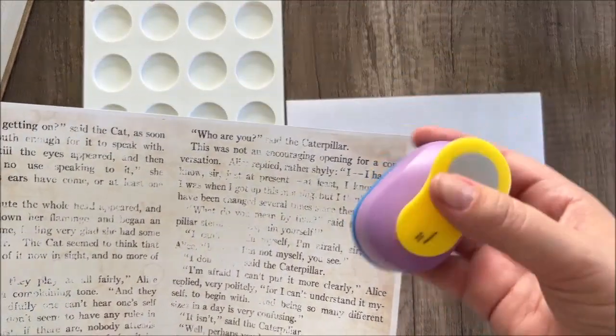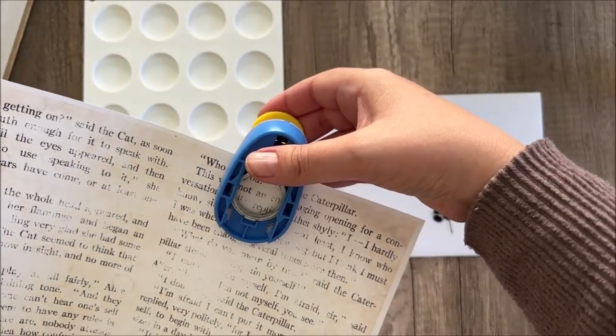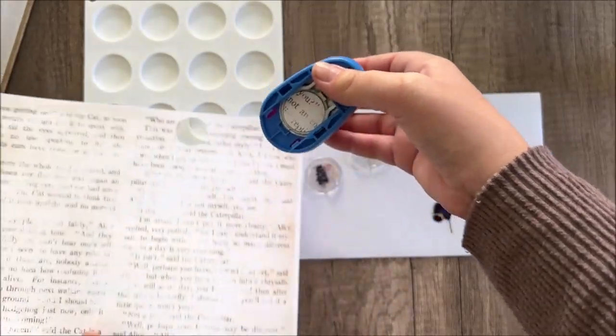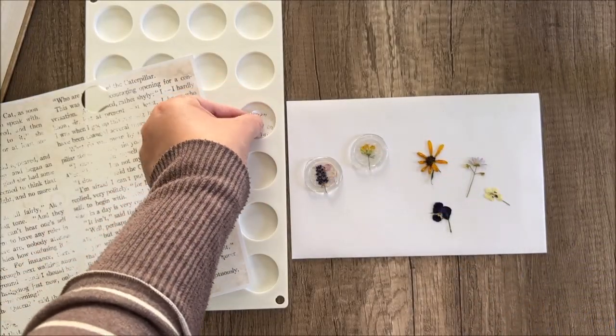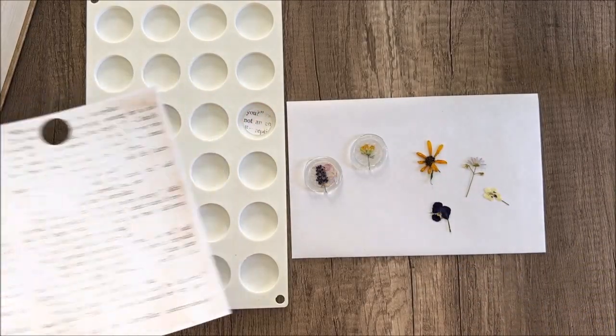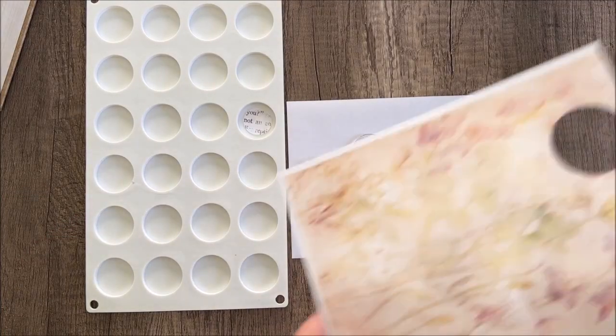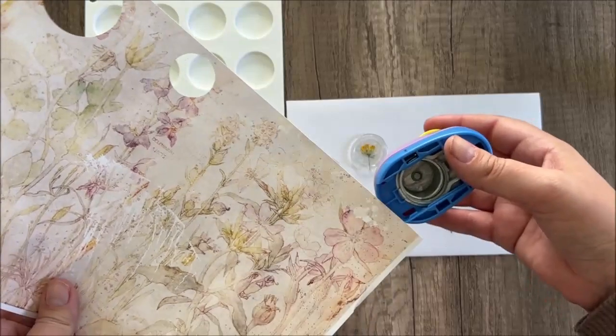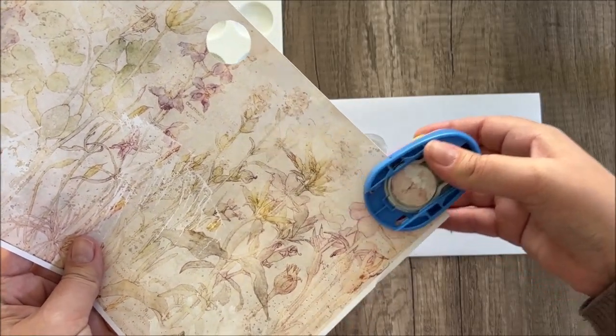And I've got this one and a half inch circle punch. I'm going to go ahead and use that for some of these and just kind of pick a spot to punch. And I'm going to set that inside my mold, and I think I'll pick one of these pretty watercolors too.